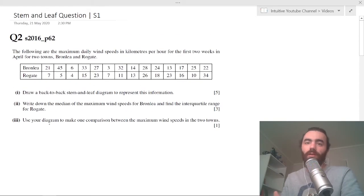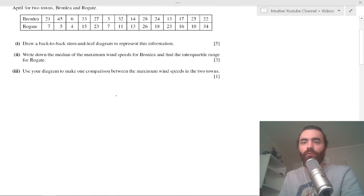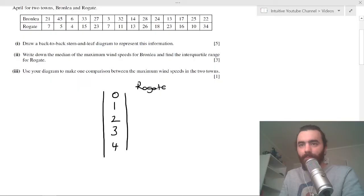So you just first of all do your stem, which is how you're going to group your data. So you're going to group it in the zeros, the single digits, then the tens, the 20s, the 30s, and the 40s. 45 is the highest, so we're just going up to the 40s. And then you can put your two towns on either side, so let's put Rogate here and put Bronley, what a name, there. And then you can just write down the information.